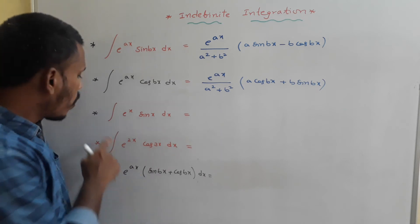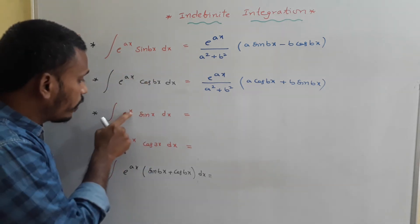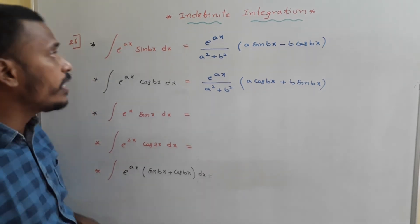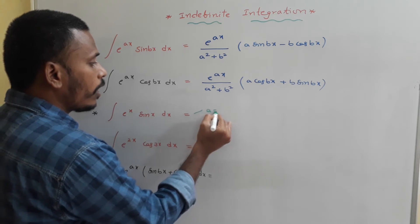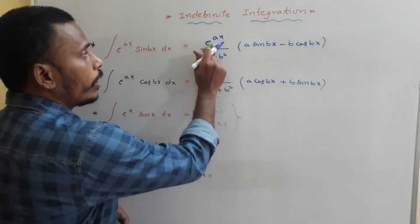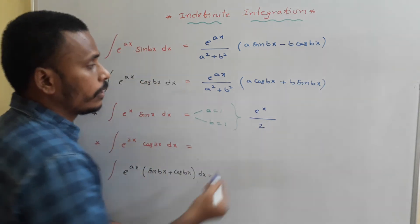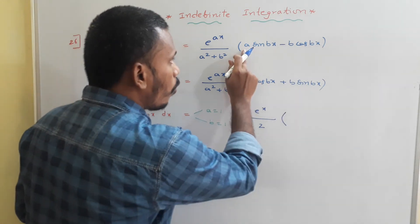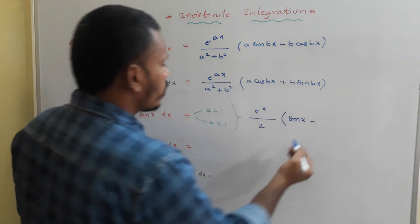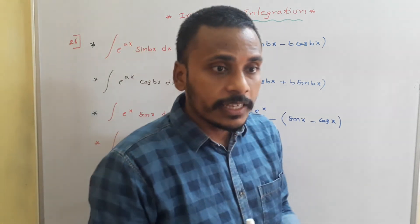Now use these to answer example problems. For integral of e^x·sin(x)dx: comparing with e^(ax)·sin(bx), a = 1 and b = 1. Substituting into the formula: e^x/(1² + 1²)·(1·sin(x) − 1·cos(x)) = e^x/2·(sin x − cos x) + c. For integral of e^(2x)·cos(3x)dx: comparing with e^(ax)·cos(bx), a = 2 and b = 3. Result: e^(2x)/(4 + 9)·(2·cos(3x) + 3·sin(3x)) = e^(2x)/13·(2cos(3x) + 3sin(3x)) + c.